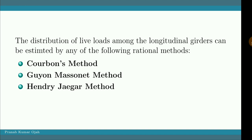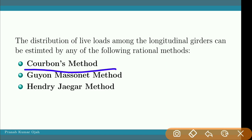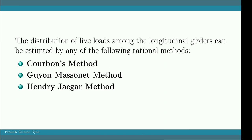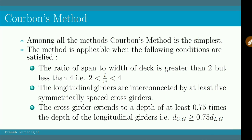For the T-beam deck slab type of bridge, the distribution of live loads among the longitudinal girders can be estimated by one of the following rational methods: Corbain's method, Guyon-Massonnet method, and Henry-Jaeger method. Among these three methods, Corbain's method is most commonly used as it has simpler computations. It is the simplest among all three methods.